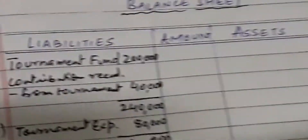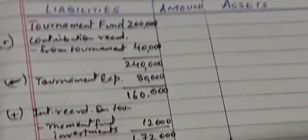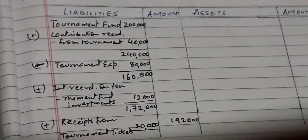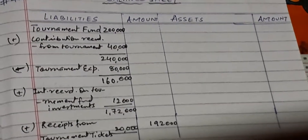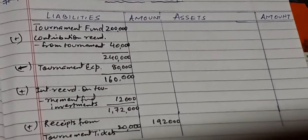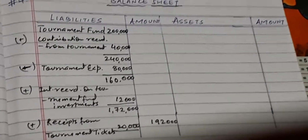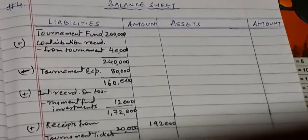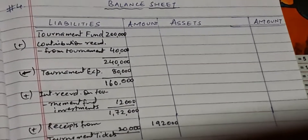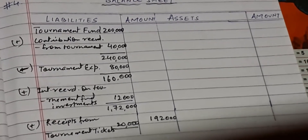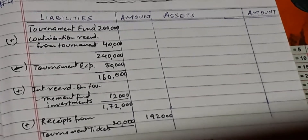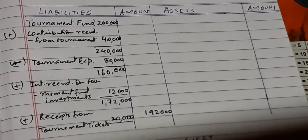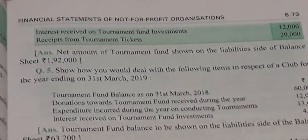Again we have to prepare the balance sheet. In the liability side we recall the tournament fund. Contribution received for the tournament fund is added with tournament fund. Tournament expenses will be deducted. Interest received on tournament fund investment will be added, and receipts from tournament tickets will also be added.